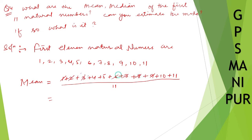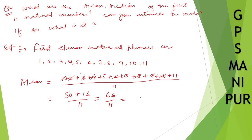So 40 + 10 = 50. Then 11 + 5 = 16, and 50 + 16 = 66, divided by 11. Since 11 × 6 = 66, the mean is 6.